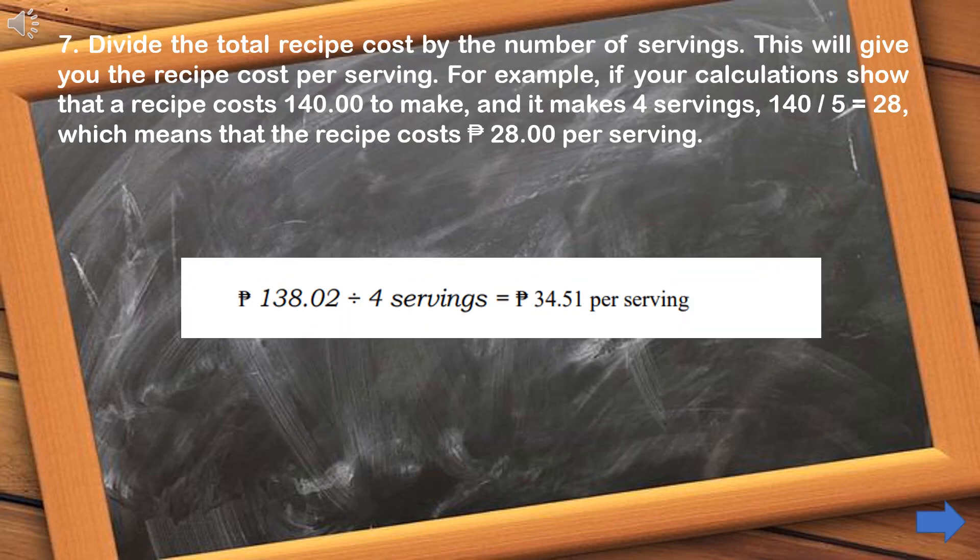Step number 7: Divide the total recipe cost by the number of servings. This will give you the recipe cost per serving. For example, if your calculations show that the total cost is a certain amount, divide by the number of servings to get the per-serving cost.